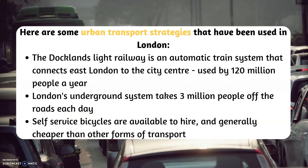The Docklands Light Railway is an automatic train system that connects East London to the city centre, used by 120 million people a year. London's underground system takes 3 million people off the roads each day. Self-service bicycles are also available to hire and are generally cheaper than other forms of transport.